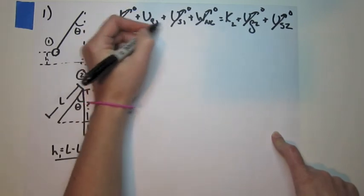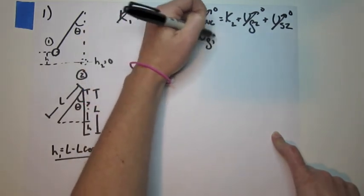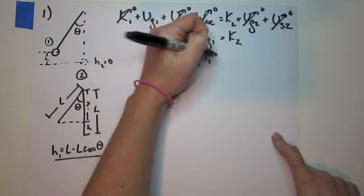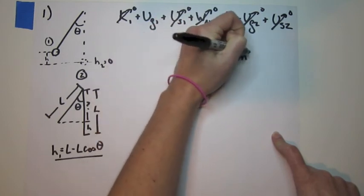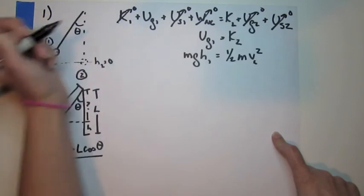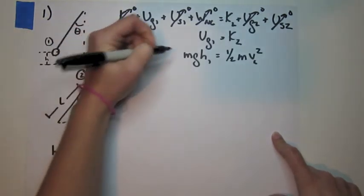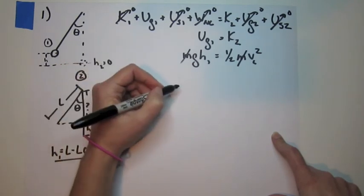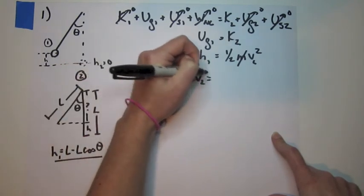And so we're left with UG1 equals T2. So in other words, MGH1 equals one-half MV2 squared. And so our M's cancel. Multiply both sides by two. Take the square root of both sides.